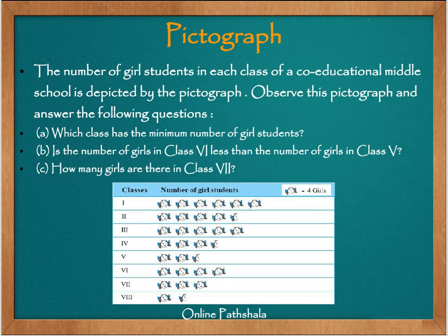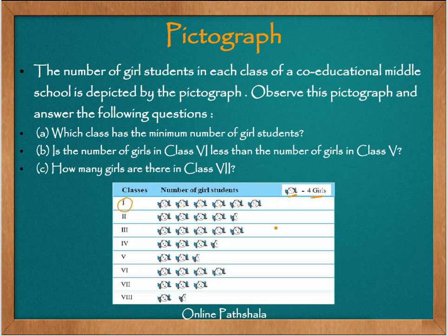Let's look at one more example. The number of girl students in each class of a co-educational middle school is depicted by the pictograph. The first column represents classes 1 through 8, and the next represents the number of girl students. Each picture represents 4 girls. So for class 1, there are 6 pictures: 6 multiplied by 4 equals 24 girls in class 1.